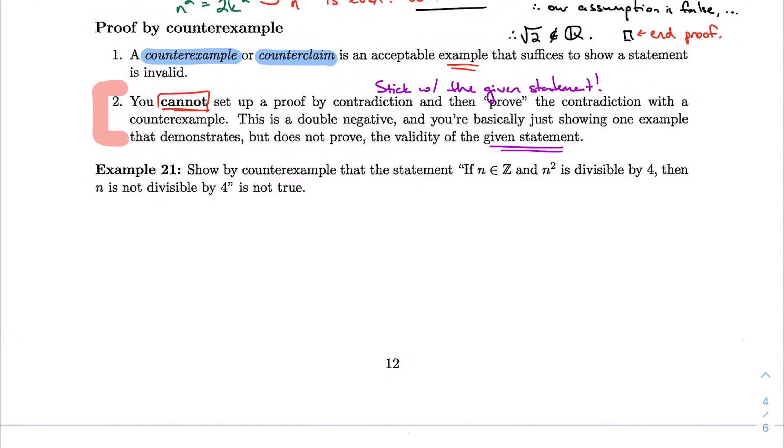For example, show by counterexample, and this is actually a typo here, so please make a note of this. That's not where the typo is, this is the typo. Show by counterexample that the given statement here is not true. And the statement is, n is an integer, and n² is divisible by 4, therefore n is also divisible by 4.